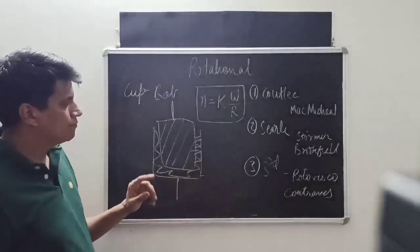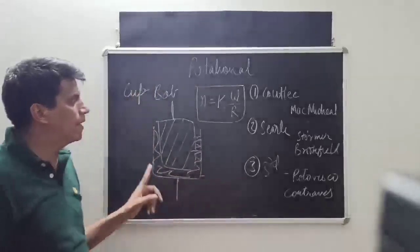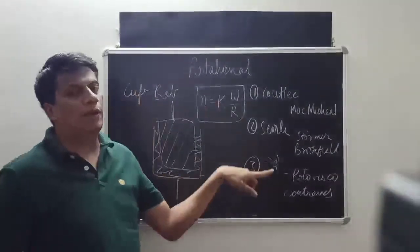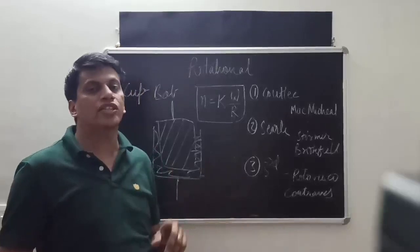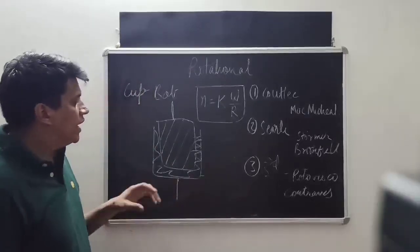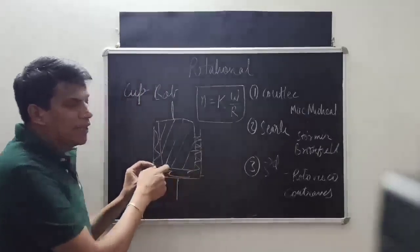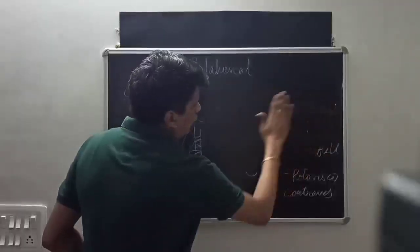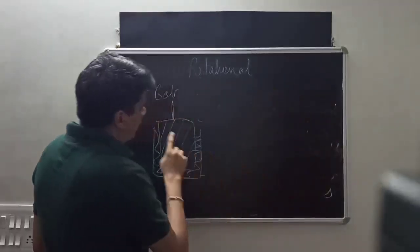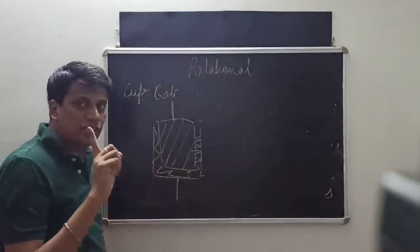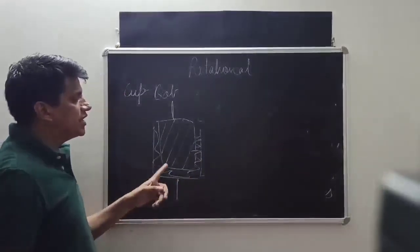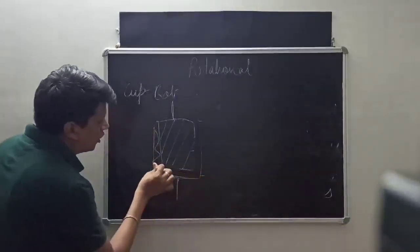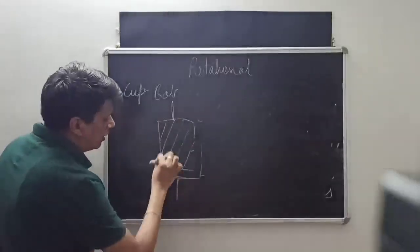One very important limitation of cup and bob viscometers led to the development of cone and plate viscometers. The first disadvantage is that a large amount of material is required in cup and bob viscometers.